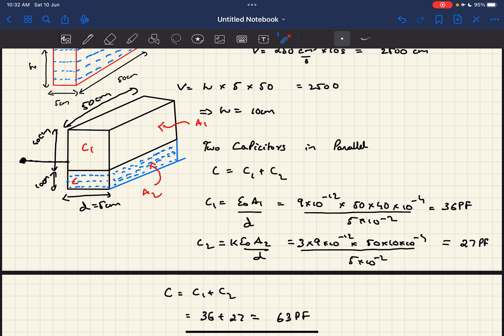Divided by d, which is the distance between the two plates, putting the values in we get 36 picofarad. For C2, as it's given that the fluid has a dielectric constant of 3, you have to multiply a k to it. Substituting that, we get the answer as 27 picofarad.